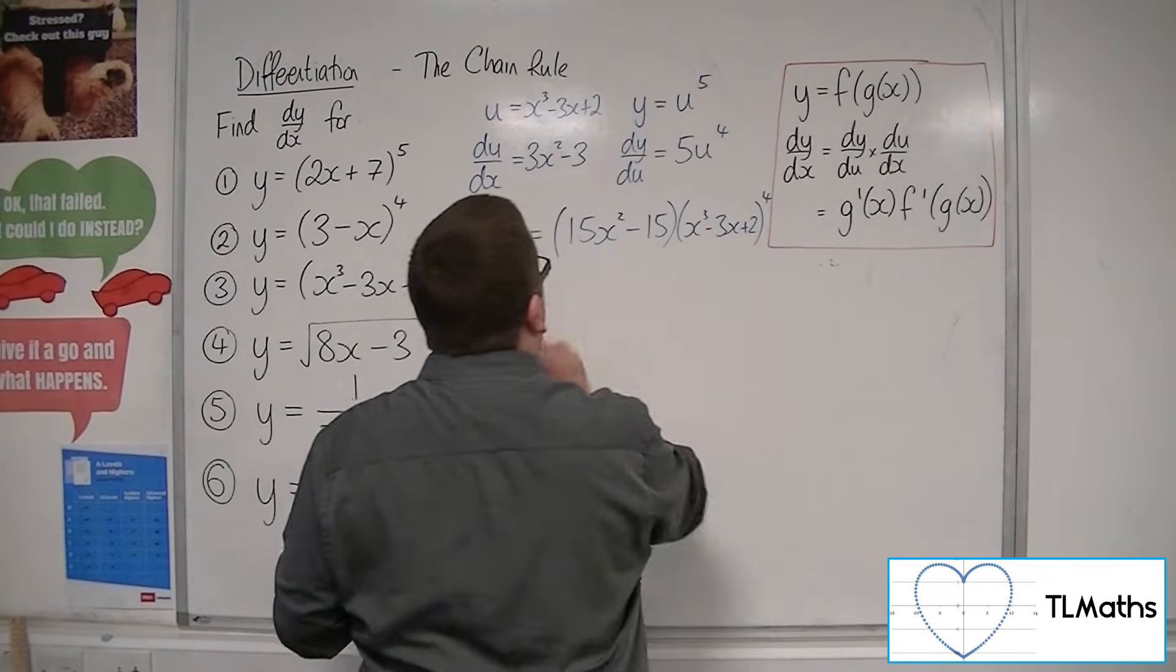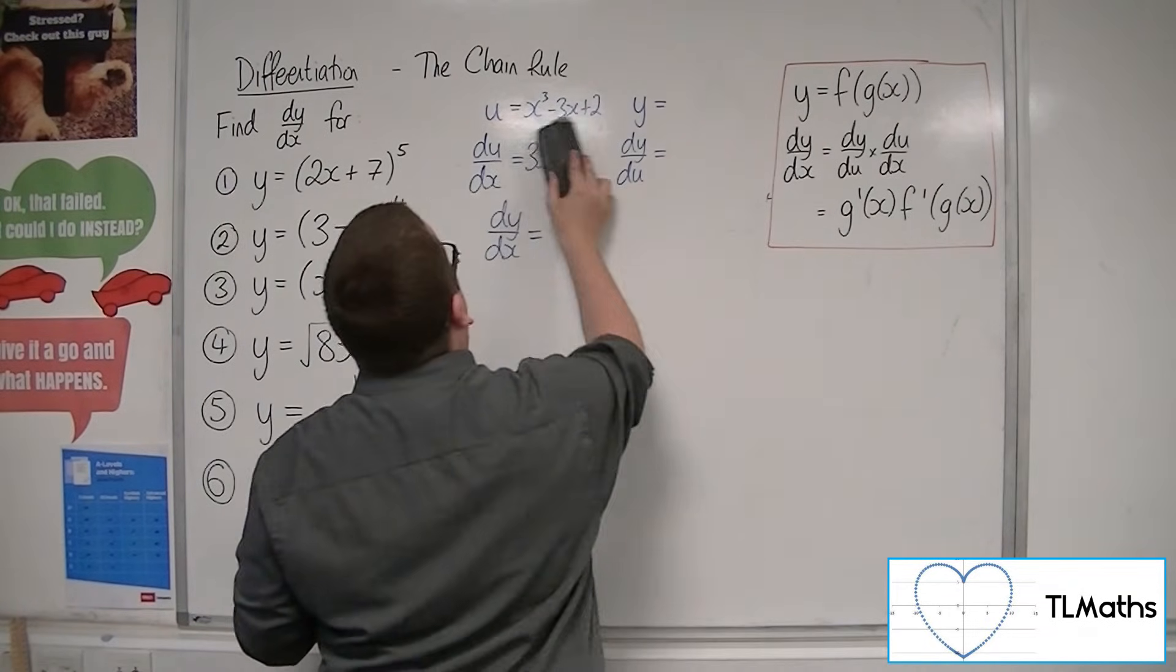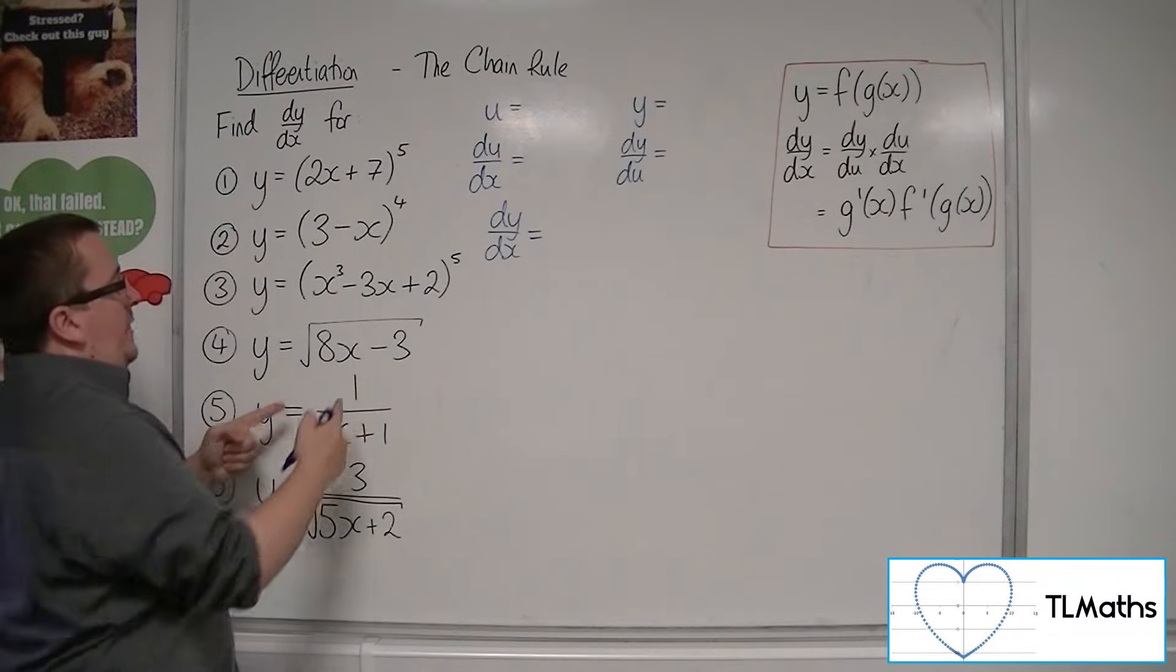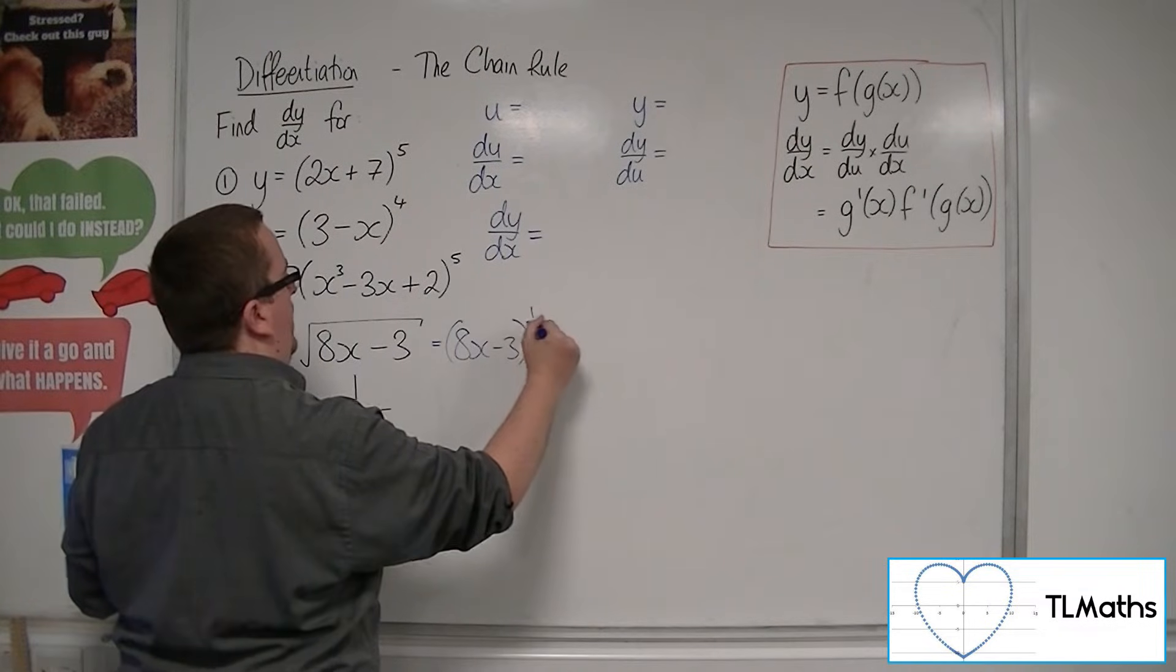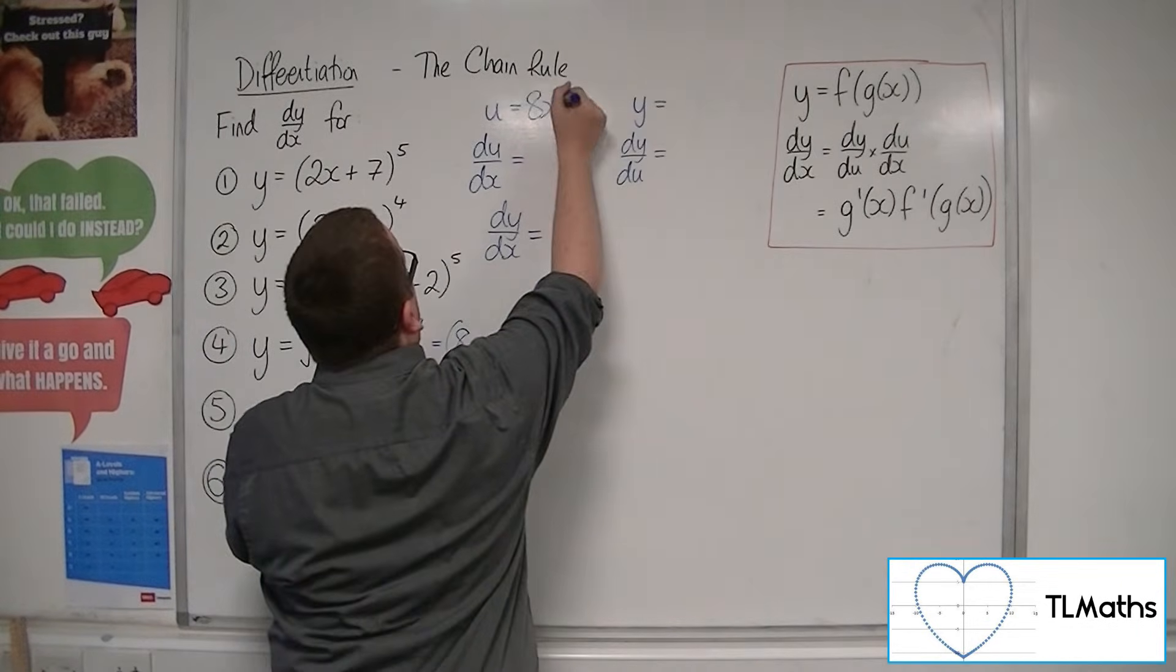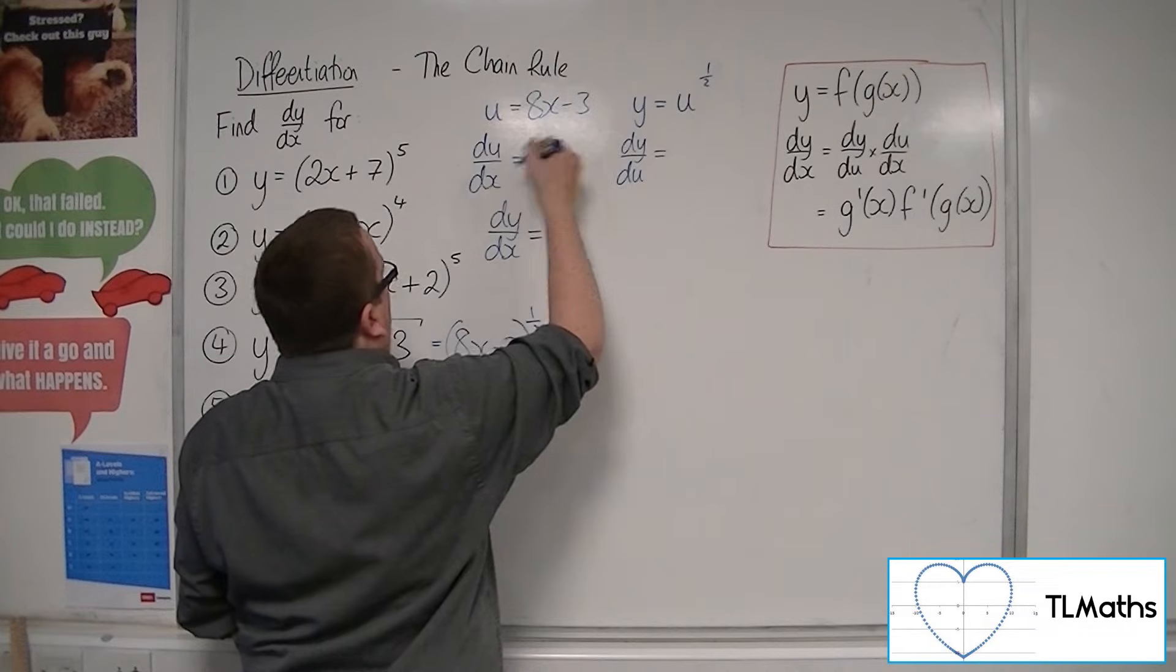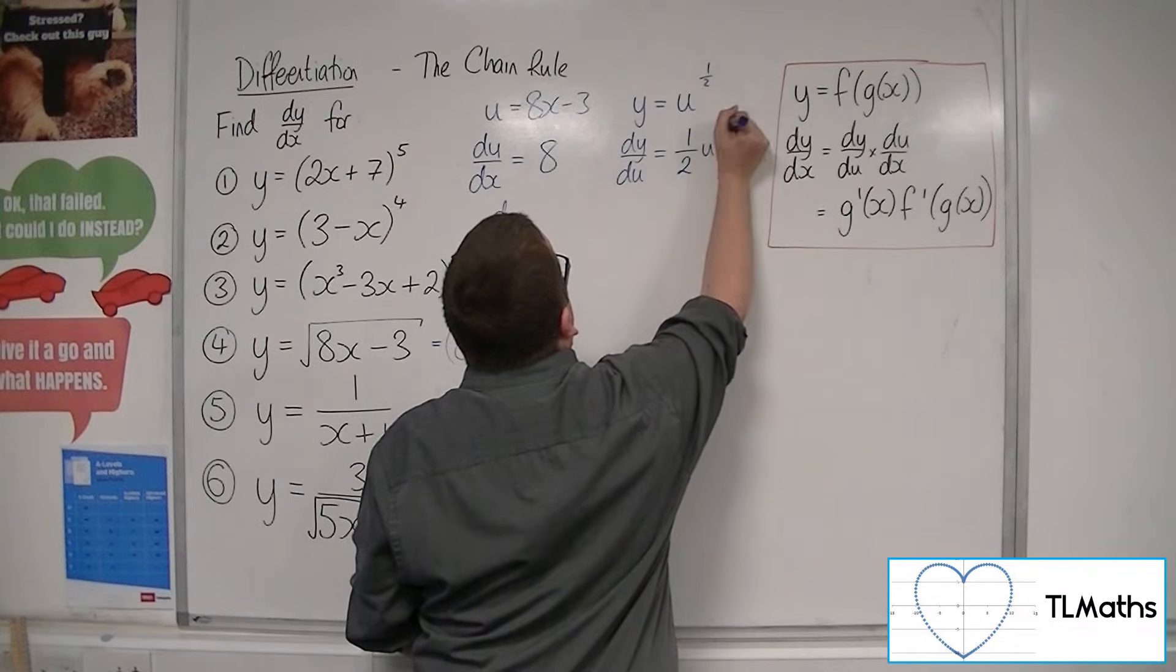Right. Let's have a look at the next one. What have we got? 8x minus 3 square rooted. So I'm going to rewrite that as 8x minus 3 to the power of a half. So that it's clear that the u is the function that's inside the bracket, the 8x minus 3. And we will have y equals u to the half. So when I differentiate this with respect to x, I get 8. And differentiate that with respect to u, I get 1 half u to the minus 1 half.